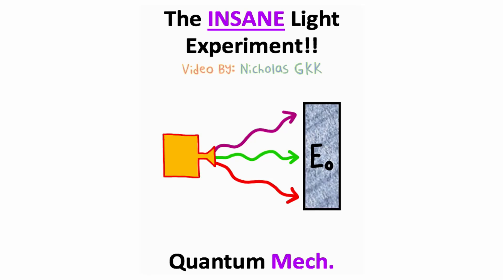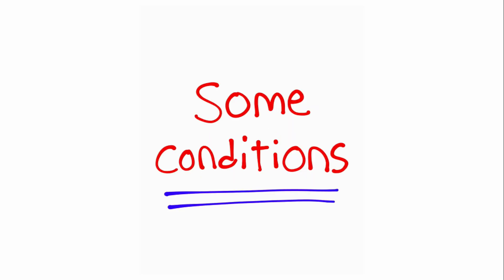Quantum mechanics and chemistry teach us something incredible. If you take a metal and shine light onto that metal with the right frequency, you can actually get electrons in the surface atoms of the metal to be ejected from the surface. Now, there are some conditions that need to be met for this experiment to work.